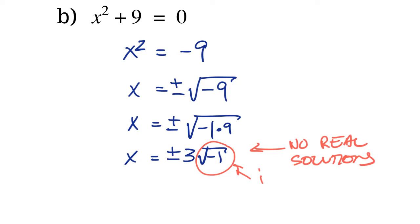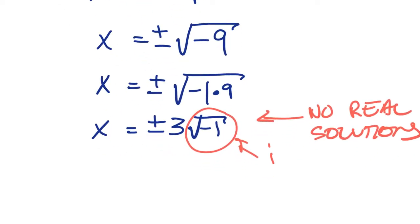They were called imaginary numbers. The first mathematicians that proposed this were seen as a little bit crazy, because it's not a real number. So they used imaginary as a bit of a derogatory name for these things, but it sort of stuck. So we're stuck with the i for imaginary. So really, the solution to this problem is x equals plus or minus 3i, where i stands for the square root of negative 1.